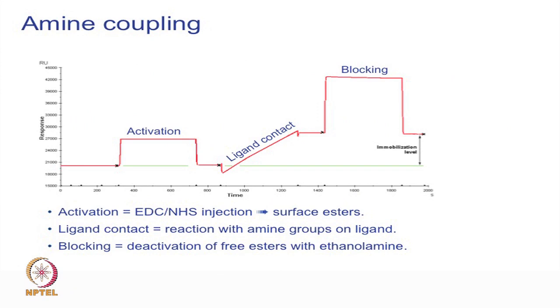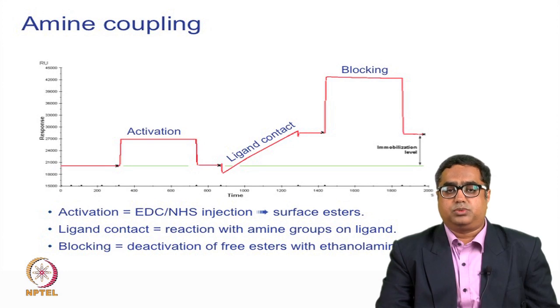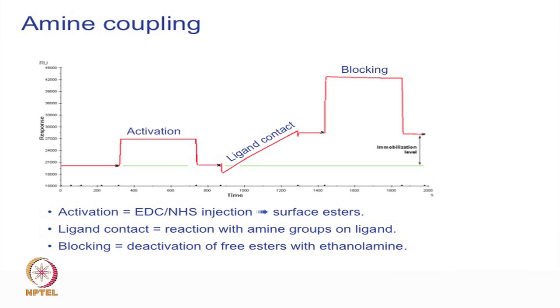The advantage of a capture approach is that you can use an impure or crude mixture of a ligand, whereas with a direct or covalent coupling method, higher purity is required. Taking amine coupling as a very common example, activation of the surface is done by chemicals EDC and NHS, which activate the surface esters. The amine groups of molecules are then covalently coupled on the surface of the chip and the extra activated groups are blocked by ethanolamine.